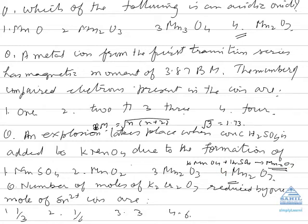Number of moles of K2Cr2O7 reduced by one mole of stannous ions: K2Cr2O7 in acidic medium loses six electrons, and stannous changes to stannic by losing two electrons. So for one mole of potassium dichromate, you will require three moles of stannous ions. In the question, he is giving you one mole of stannous ions, so potassium dichromate will be one by three.